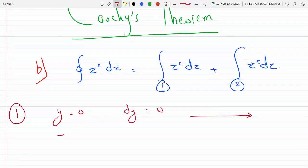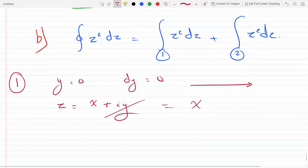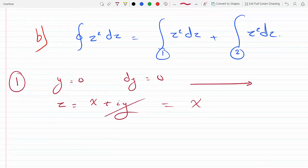So z will equal x plus iy. There's no y, so that's just x. And dz will equal dx, there's no dy, so dx. And we are going to integrate from minus 1 to 1.